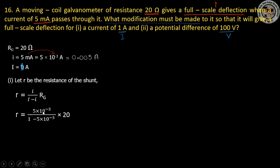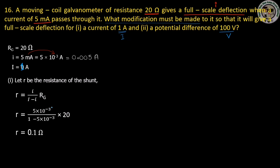I will substitute the values: I_g is 5 into 10 to the power minus 3, which is 0.005 A. I minus I_g is 9.995. So, R_shunt equals 5 into 10 to the power minus 3 divided by 9.995, into 20.